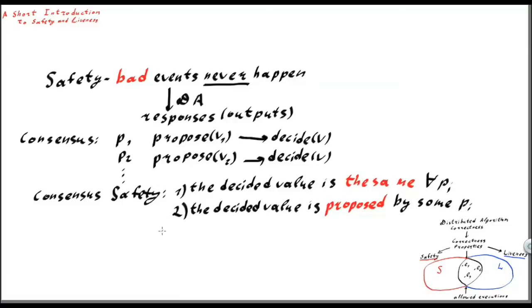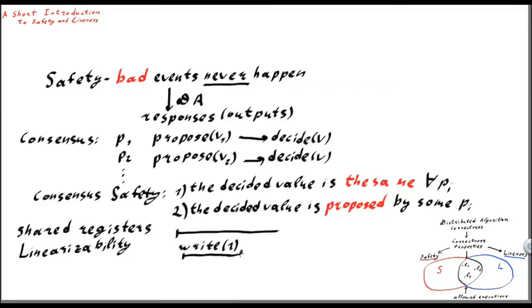Consider another example of a shared object, namely shared registers. A safety property of shared registers is linearizability. Roughly speaking, it states that it is possible for every operation on shared register to find a linearization point, such that if we replace this linearization point with a corresponding operation, then the resulting execution is correct.